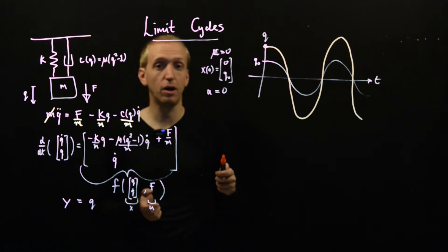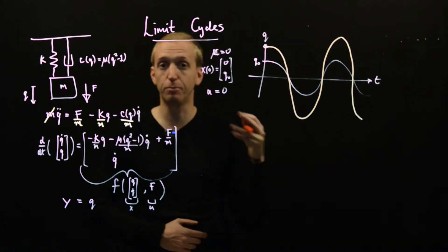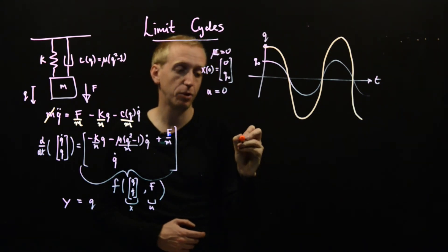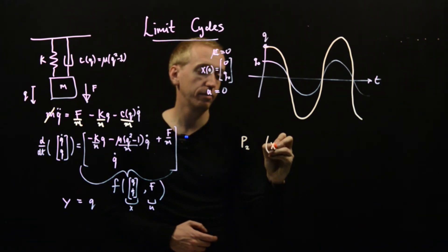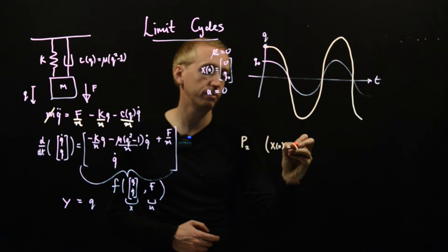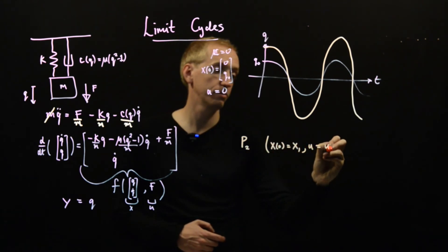So it's true that linear systems can have periodic solutions but they can't have periodic solutions with fixed amplitude and period for a range of different initial conditions. And why is that? Well we can see that directly from our property 2.